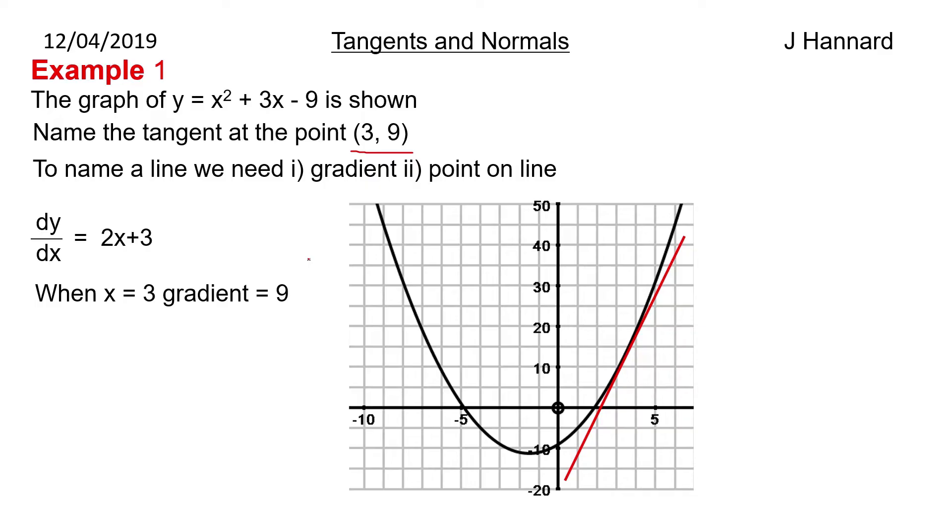If you go back to lesson 4 in this playlist, we know the equation of a line is y - b = m(x - a). So we put in our coordinates and our gradient, so we get y - 9 = 9(x - 3). We expand the brackets to get that, and then we take the 9 over the other side. So that line is y = 9x - 18. That is the tangent to the curve y = x² + 3x - 9 at the point (3, 9).